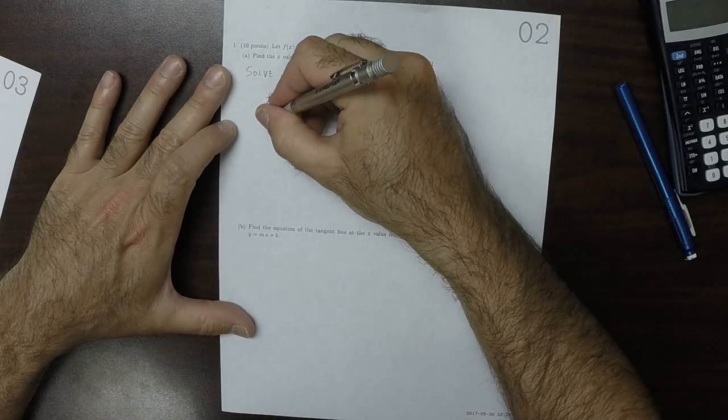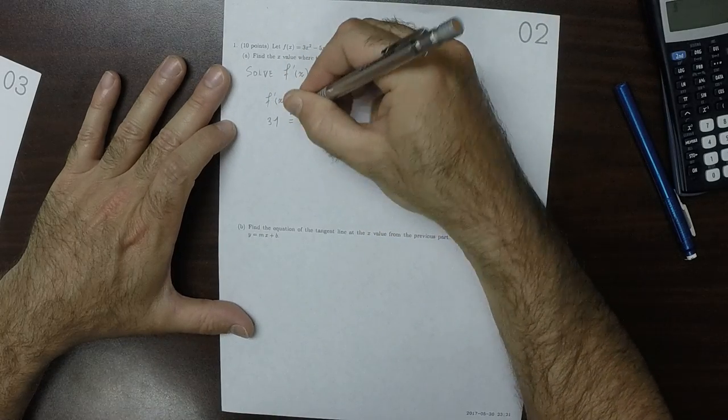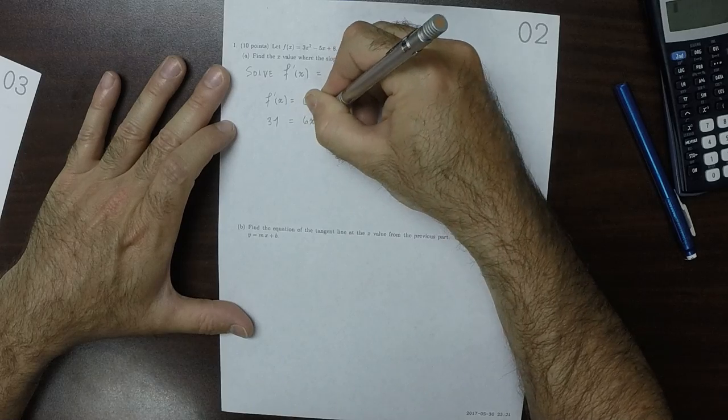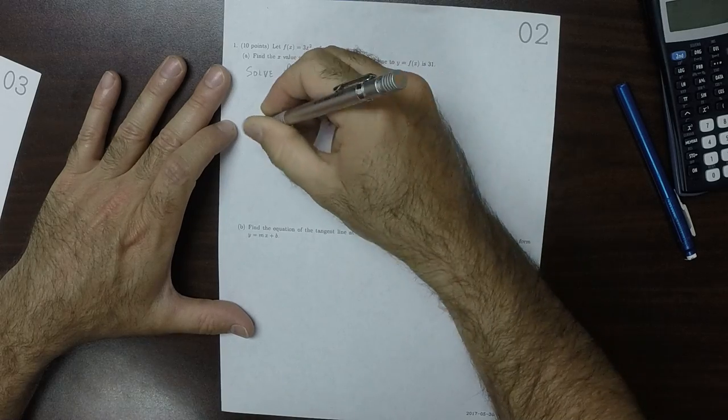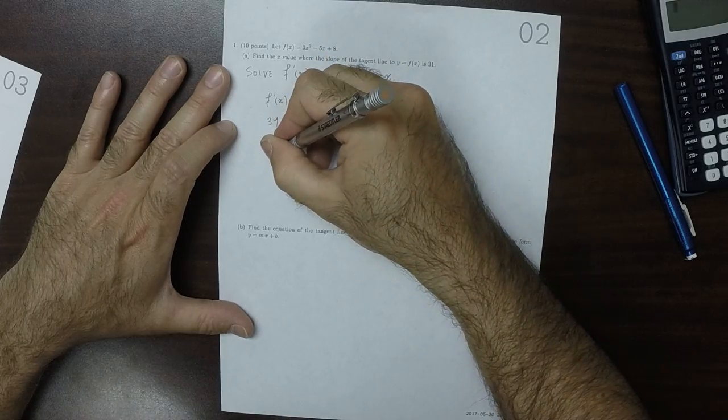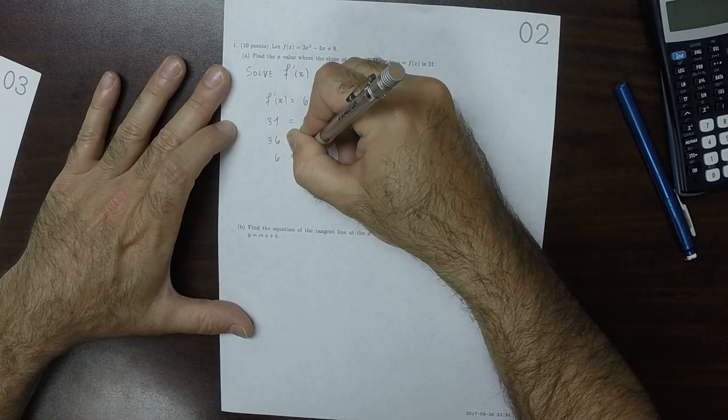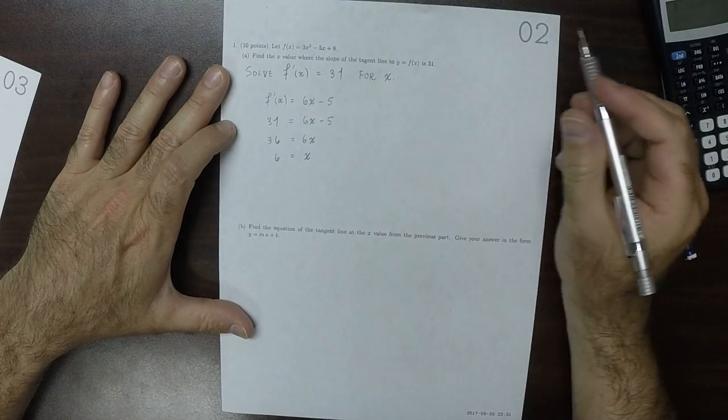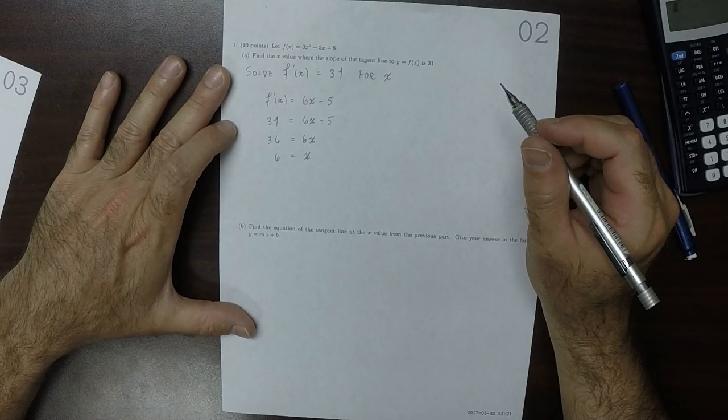So 31 is 6x minus 5. Move the 5 to the other side. 36 is 6x, divided by 6. So 6 is x. That's where slope 31 occurs.